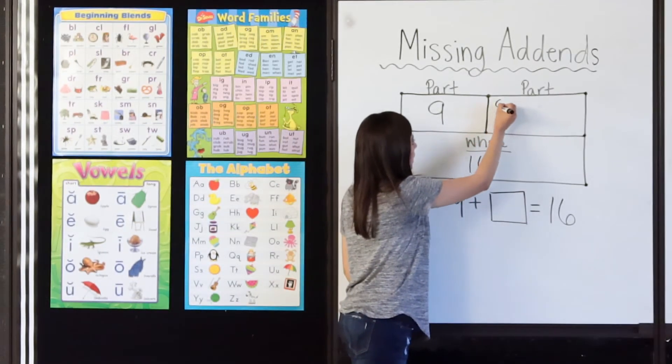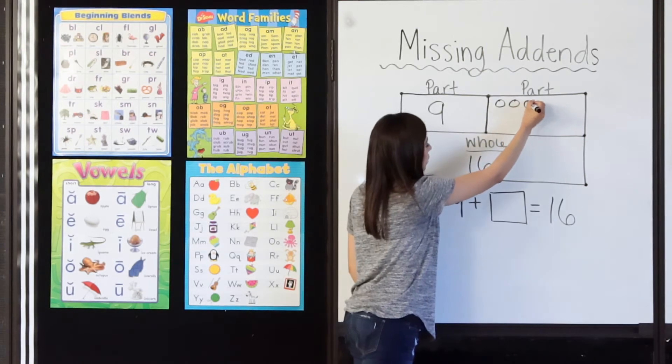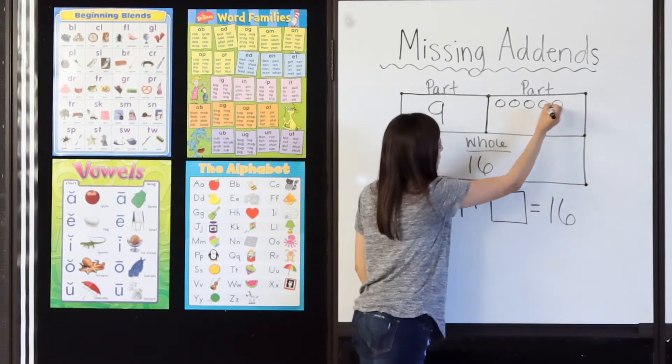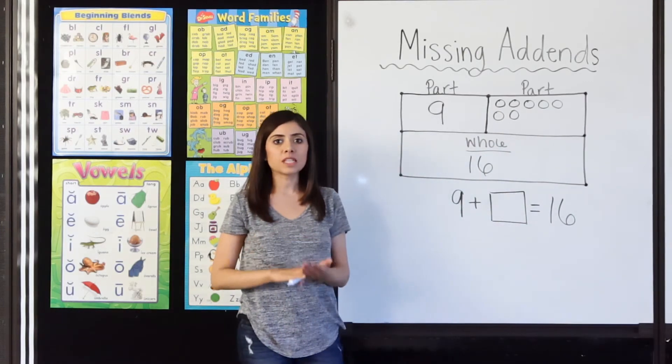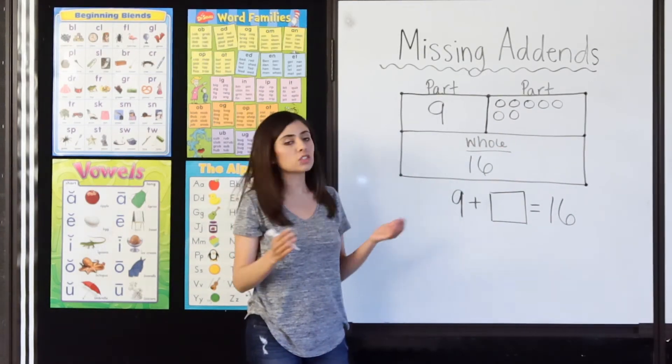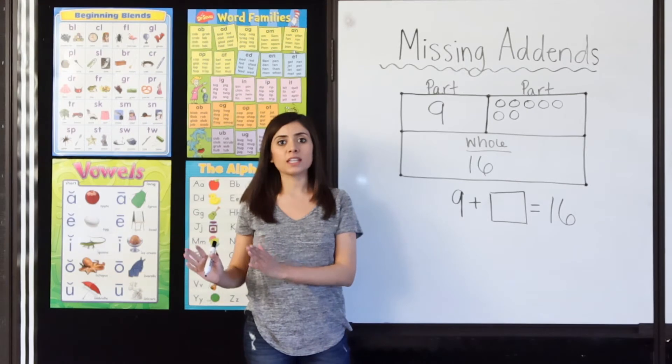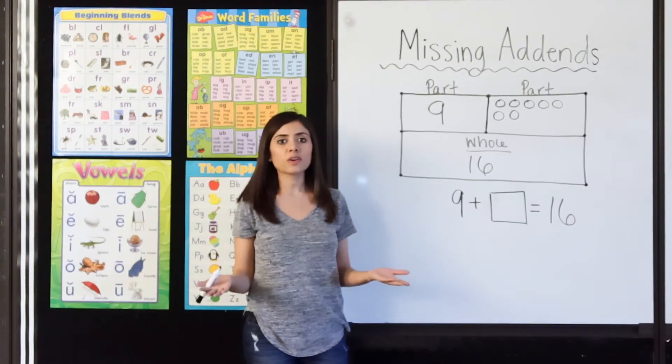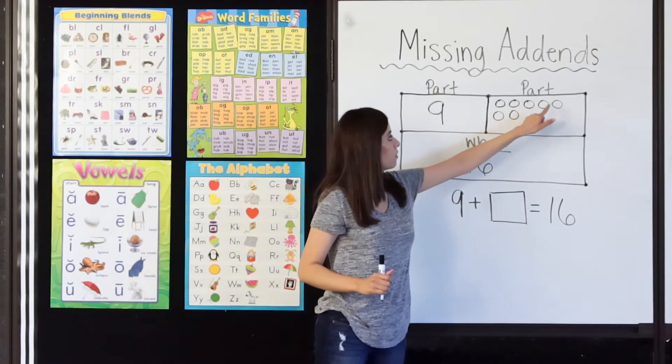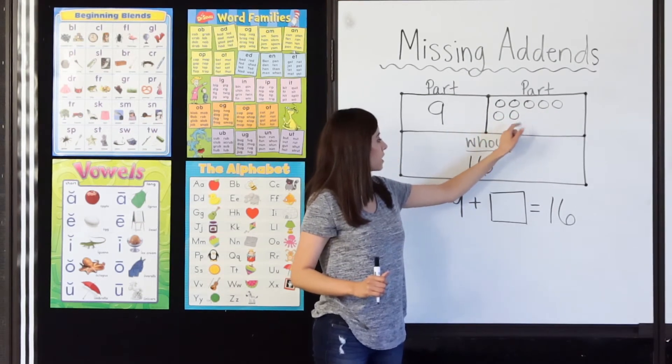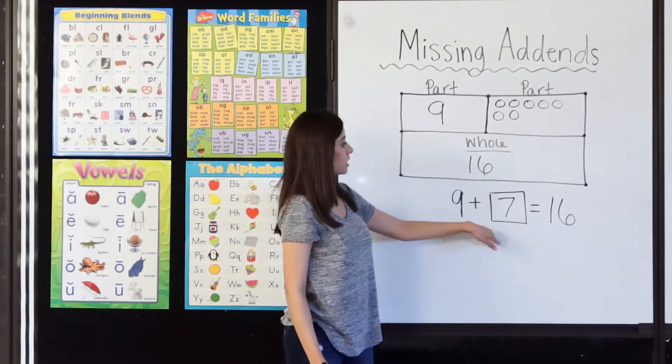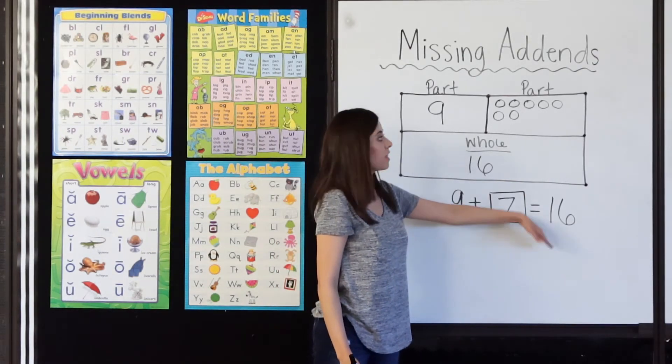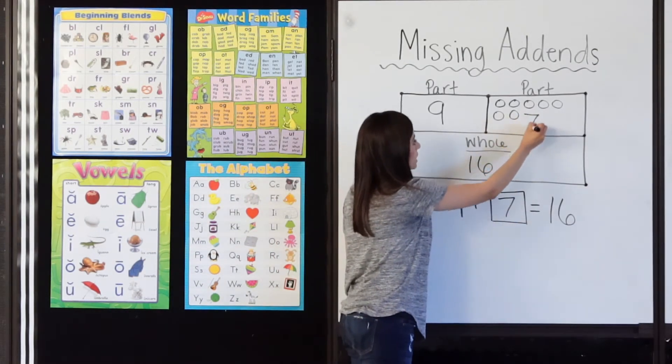9, 10, 11, 12, 13, 14, 15, 16. Okay, I stopped at 16, but how many circles did it take to get from 9 to 16? Let's go ahead and count. 1, 2, 3, 4, 5, 6, 7. 9 plus 7 equals 16. That missing part was 7. Very good.